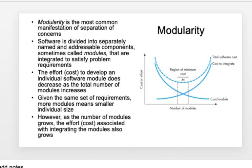Modularity is the most common manifestation of separation of concerns. It involves dividing software into small, manageable, addressable components called modules. The effort and cost to develop an individual software module decreases as the total number of modules increases; however, when the number of modules grows, overall integration effort also grows — this trade-off is depicted in a graph on this slide.